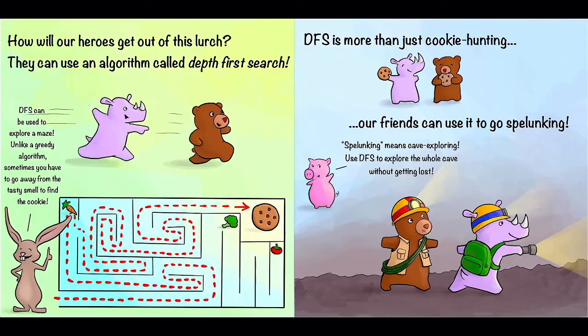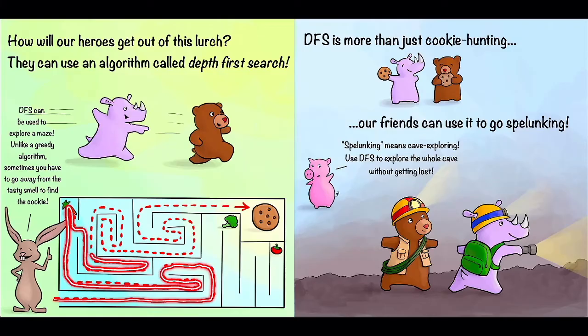So here's what depth-first search would do in this maze. We start out going like this, and we're going to explore every possible avenue we can until we find the cookie. So we explore this corner, and then all the way up. Whoops, carrot, turn around. Explore this corner, and this corner, and all the way around, until we finally find the cookie. Hooray!